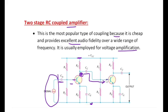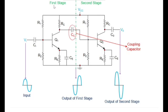From the collector terminal, the amplified signal is sent to the next stage through a coupling capacitor. The input to the next stage is also applied at the base of the second stage transistor. The second stage also has two resistors providing biasing. This transistor also amplifies the input signal, and the amplified output of the second stage is received at the output coupling capacitor. The total circuit is divided into first stage and second stage, with common biasing voltage and a common ground.